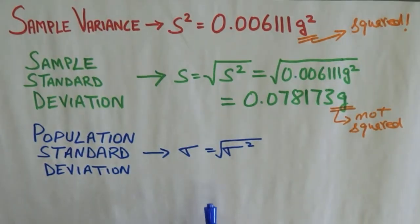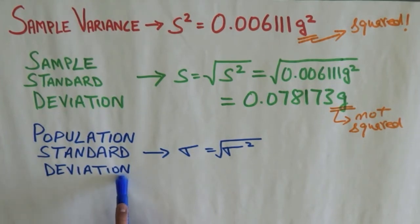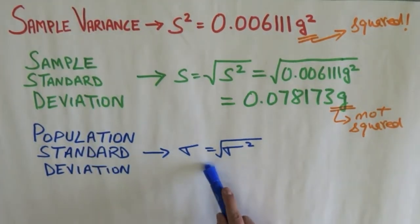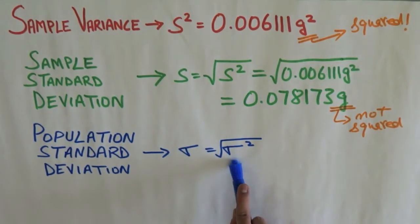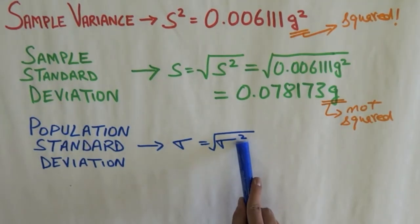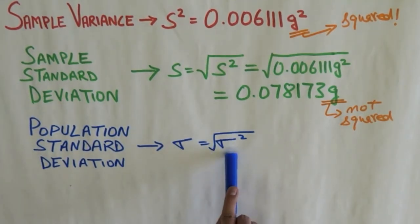As you might have guessed by now, my population standard deviation, just like my sample standard deviation, is the square root of my population variance. The square cancels out the square root and it gives us sigma.